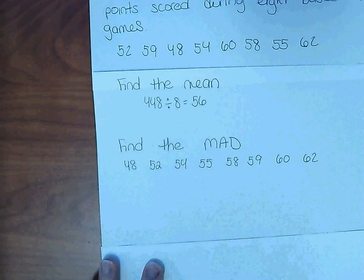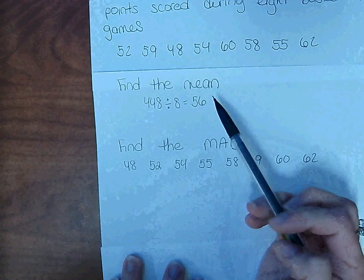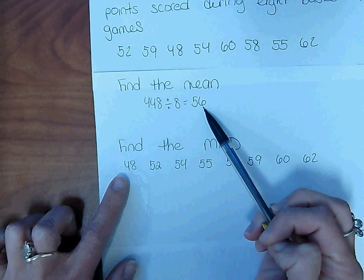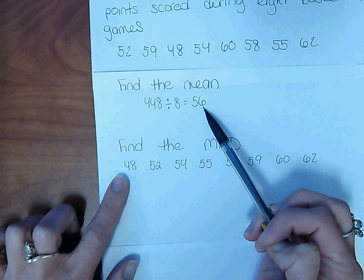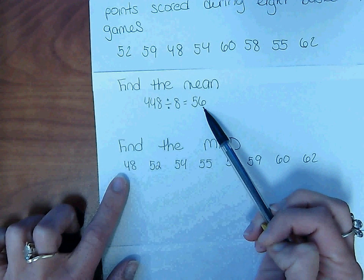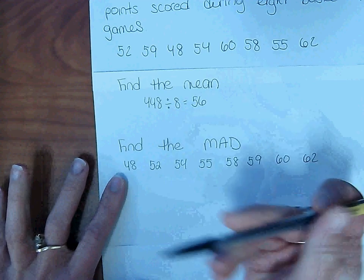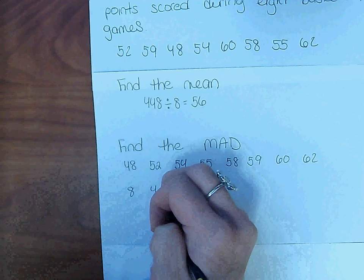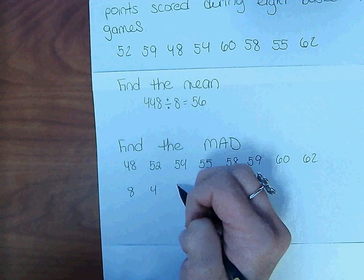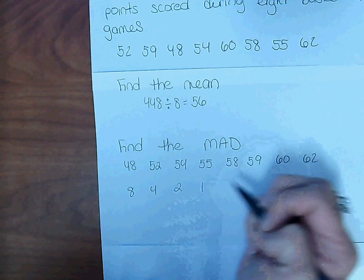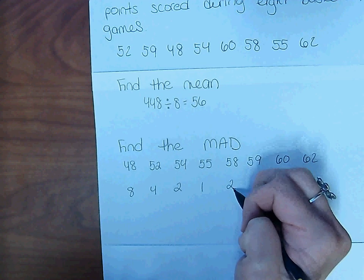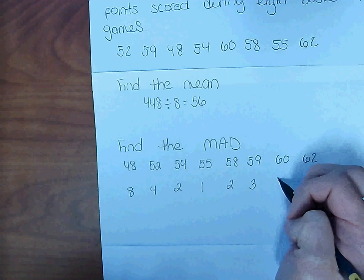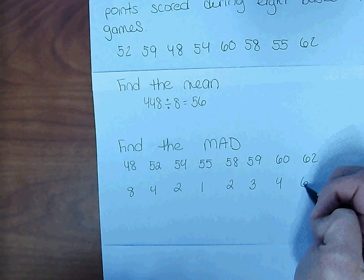Keep in mind that the mean is 56. I need to think about the distance between each data value and the mean. Distance is going to be a positive value. So: 48 is 8 away from 56, 52 is 4 away, 54 is 2 away, 55 is 1 away, 58 is 2 away, 59 is 3 away, 60 is 4 away, and 62 is 6 away from the mean.